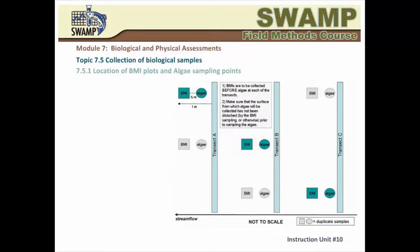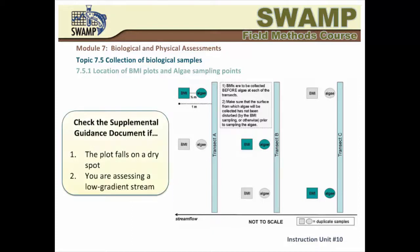If you need to collect a duplicate sample, use the sampling plots in the position adjacent to the position of the main sample, under the same transect, so the duplicate sample is collected at alternating positions in the same way. Please consult the SWAMP Algae SOP and the Supplemental Guidance Document for further information and for guidance on the sampling positions used in low-gradient streams.